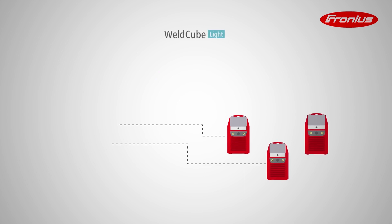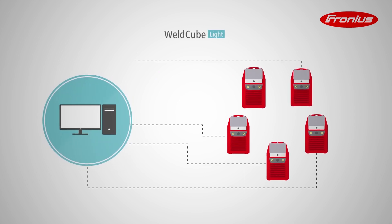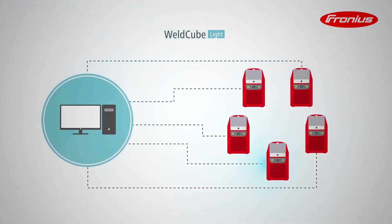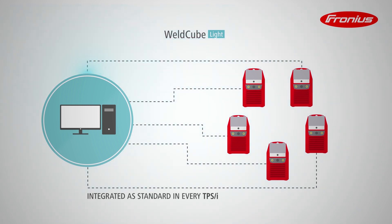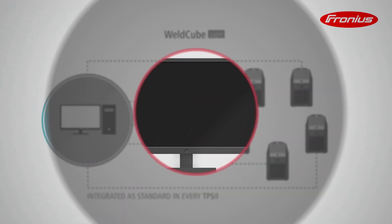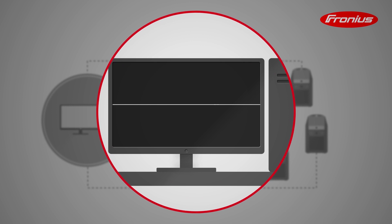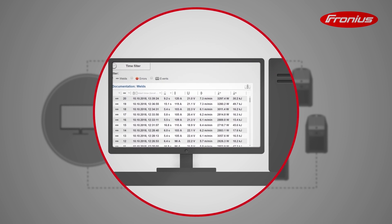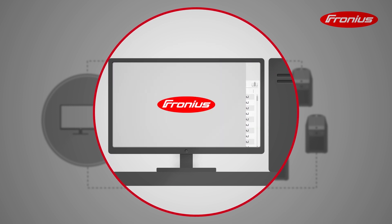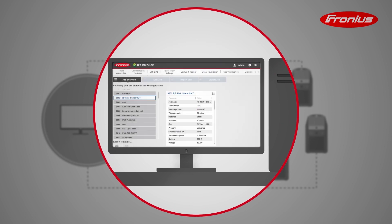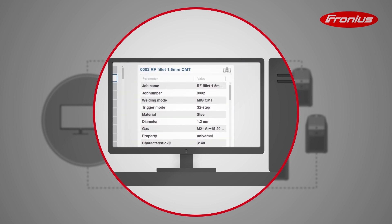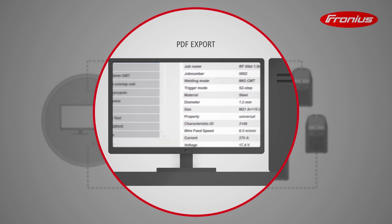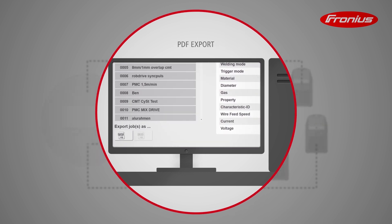WeldCube Lite is the perfect introduction to the world of data documentation. This solution comes as standard with TPS/i welding systems. With WeldCube Lite, you can document average values, welding times, and jobs per weld seam. You can display or compare jobs and export your data as a PDF document with ease.